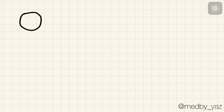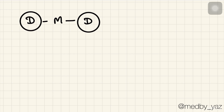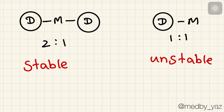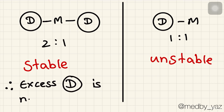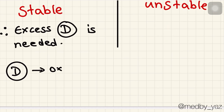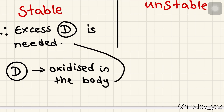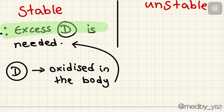The complex of two molecules of dimercaprol with one molecule of metal ion is more stable than a one-to-one complex of dimercaprol and metal ion. Therefore it is desirable to maintain an excess of dimercaprol in plasma to allow formation of the two-to-one complex. Also, dimercaprol undergoes oxidation in the body, which further emphasizes the need for excess dimercaprol. This is a very important point.